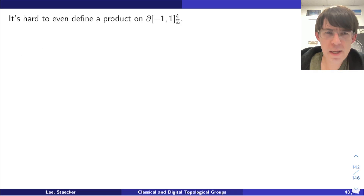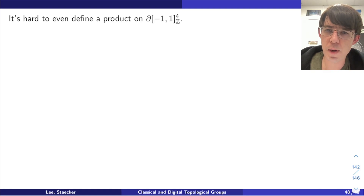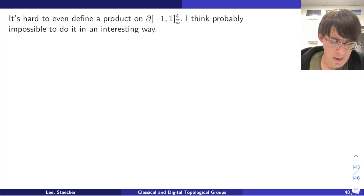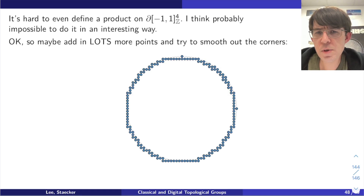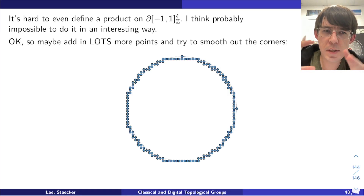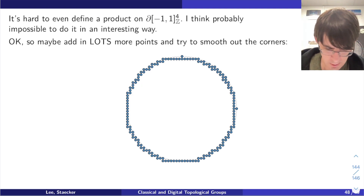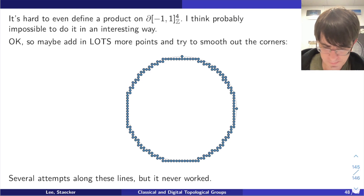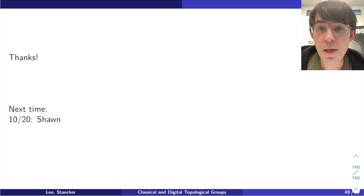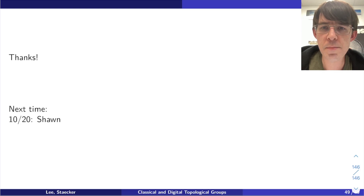That box shape can't even support a nice continuous product — I think it's probably impossible using just the box. One strategy was to use lots more points so it's not a rectangular box but a more shapely spherical thing, but that didn't work either. Several attempts, none of them worked — maybe in the future it will. That's all I have to say. Our next meeting is in two weeks. Thank you all for coming and I'd be happy to answer any questions.